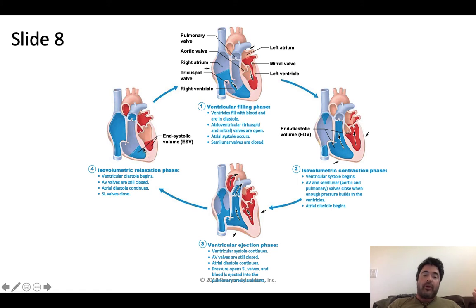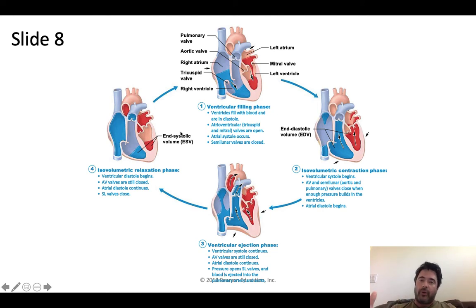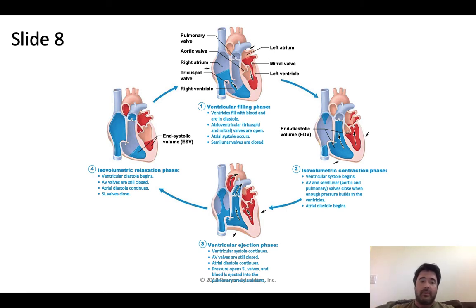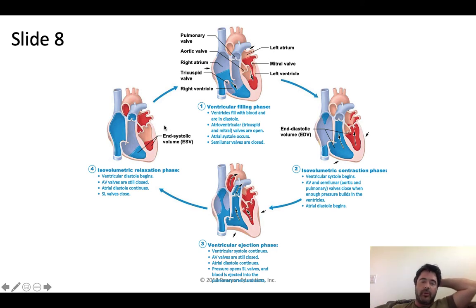Eventually the ventricles reach end systolic volume — when they've finished contracting and forced out as much blood as they're going to force. If you take end diastolic volume — say 150 milliliters — and subtract end systolic volume — say 70 milliliters — that gives you stroke volume, which is 80 milliliters. Stroke volume is the amount of blood moved with every heartbeat. It varies depending on the size of the person and their heart, but you calculate it by taking the ventricle when it's full, subtracting the volume when it's empty.